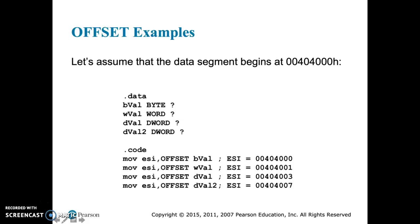And then DVAL 2 has an offset of 7, because it starts at 7, and it's essentially because you have to add 6. 2 for the word offset from WVAL, and 4 for the 4 byte offset of DVAL.